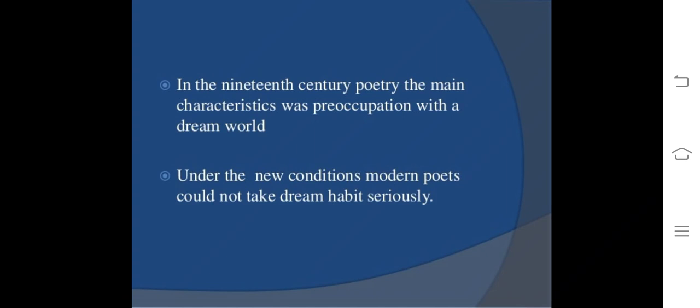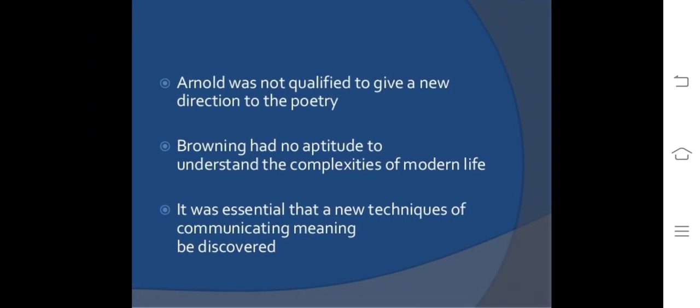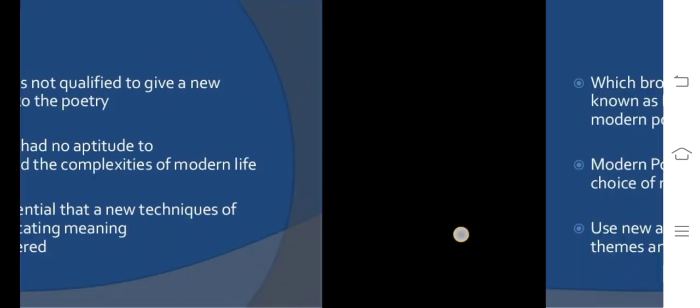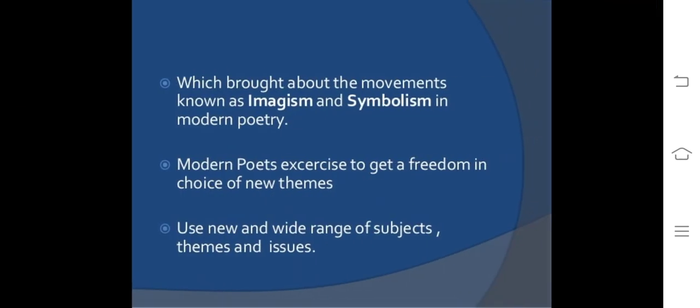In 19th century poetry, the main characteristic was preoccupation with a dream world. Under new conditions, modern poets could not take the dream habit seriously. Matthew Arnold was not qualified to give a new direction to poetry. Browning had no aptitude to understand the complexity of modern life. It was essential that a new technique of communicating meaning was discovered, which brought about the movements known as Imagism and Symbolism in modern poetry.